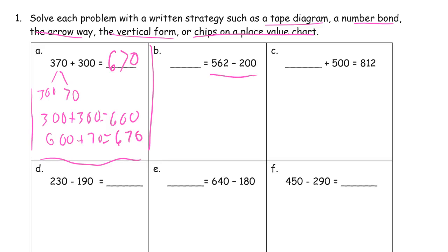And then we have subtraction here. 562. 500 minus 200. That's 300. And then we can add the 62 in there. 300 plus 62 equals 362.